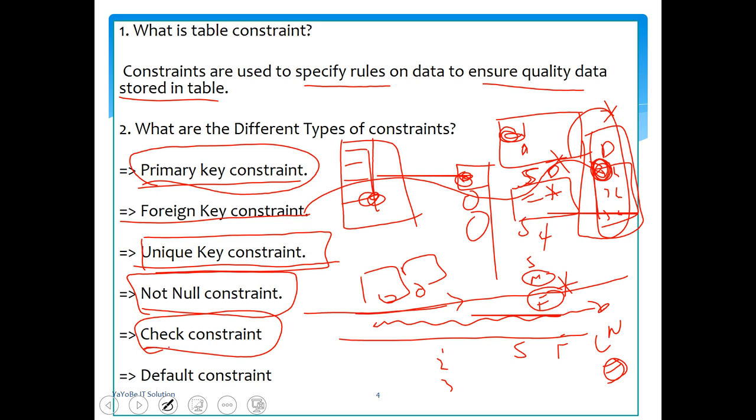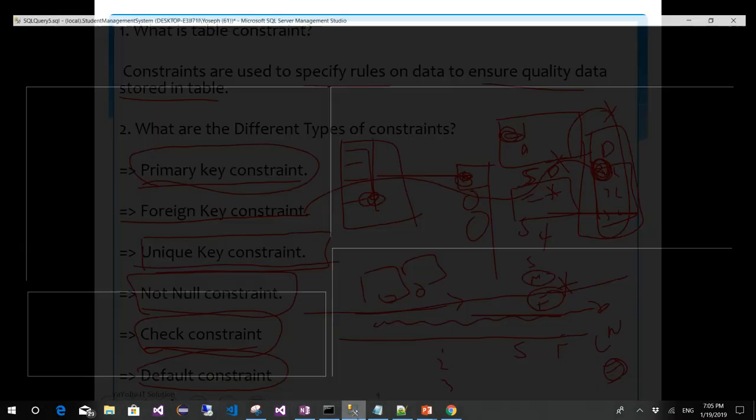Default constraint - you can set a default value. For example, by default the gender field might be set to M or F if nothing is specified. That is the default constraint. Now let's create a table in SQL Server.